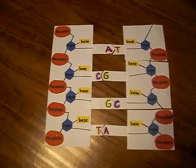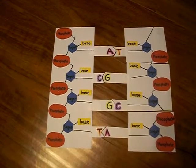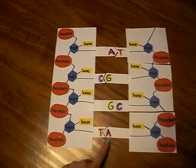Purine is one of two types of nitrogenous bases found in nucleotides and it consists of adenine and guanine.